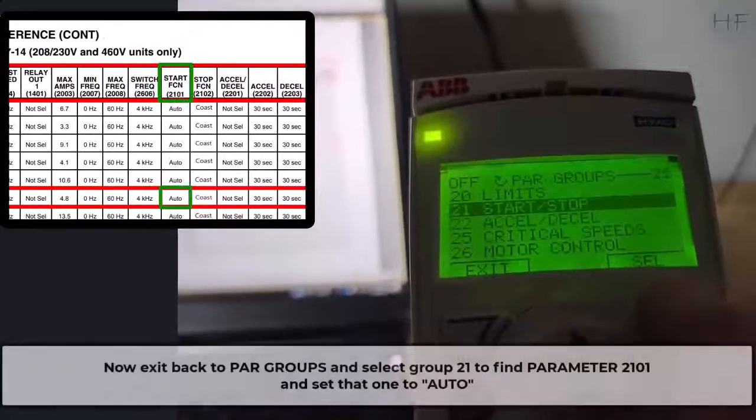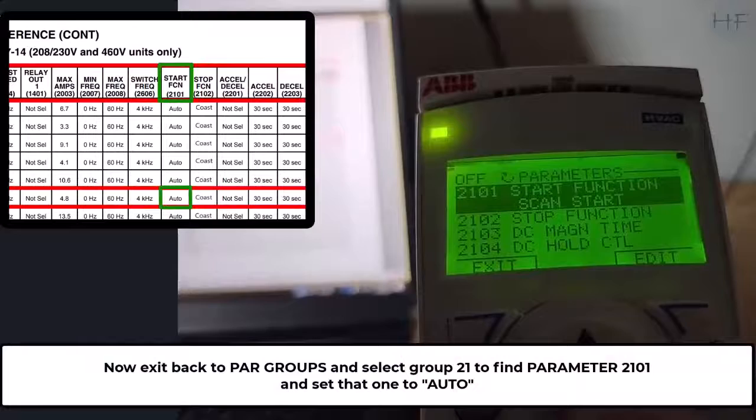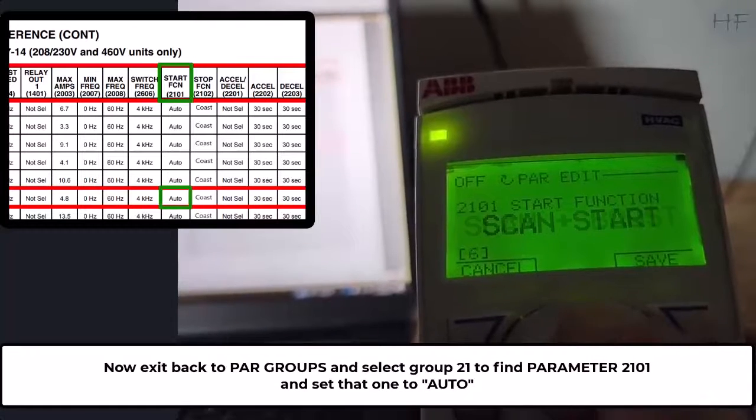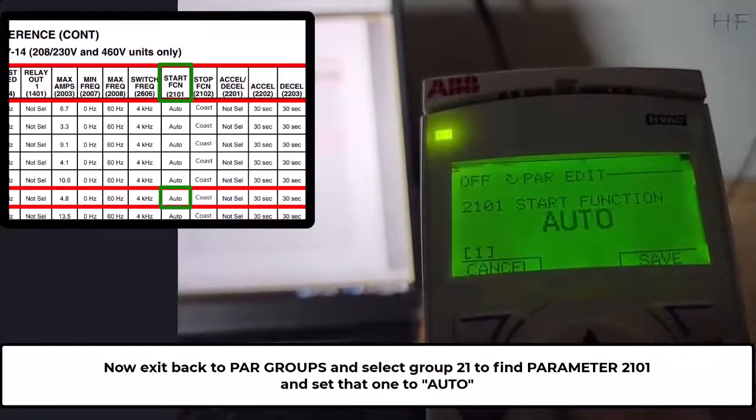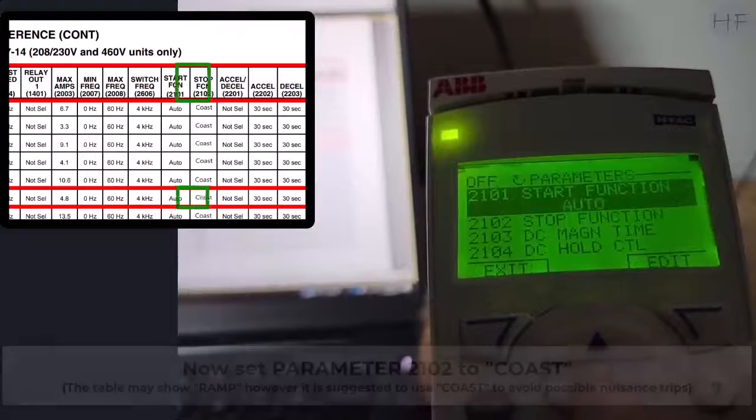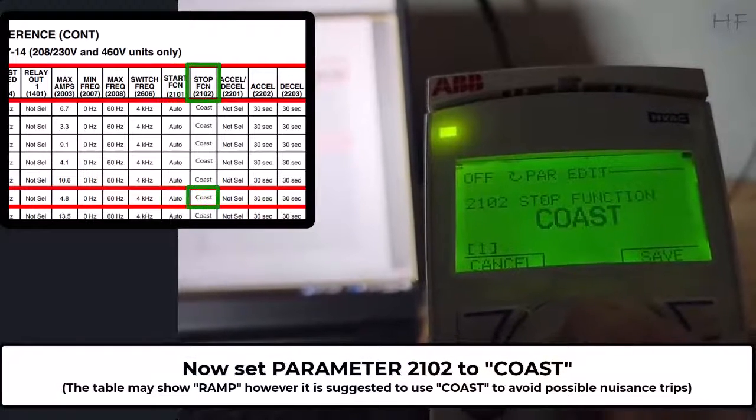Now exit back to parameter groups and select group 21 to find parameter 2101 and set that to auto. Now set parameter 2102 to coast.